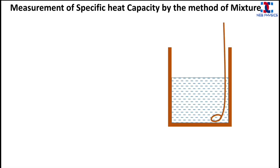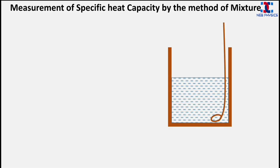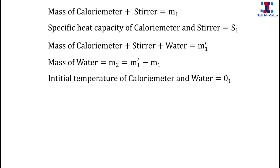About two-thirds of the calorimeter is filled with water and its mass is measured again. Let this mass be m1 prime, so: mass of calorimeter and stirrer plus water equals m1 prime. We can find the mass of water m2 by subtracting the first measurement from the second. We then measure the initial temperature of the water and calorimeter, which we call theta1. The specific heat capacity of water is given as S2.